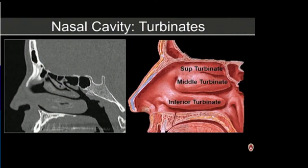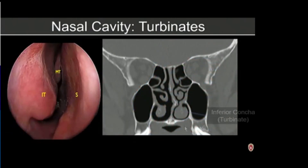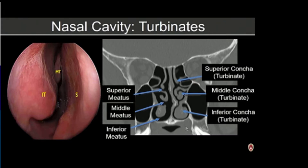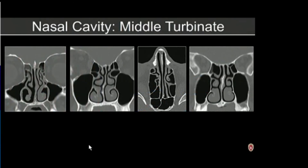Along the lateral nasal cavity we have the turbinates — for the most part the superior, middle, and inferior turbinate, though occasionally a supreme turbinate may be seen. On coronal view we can see the inferior, middle, and superior turbinate, and on their undersurfaces the inferior, middle, and superior meatus respectively. The middle turbinate is a very important landmark for surgeons; they will identify it and may take it down during functional endoscopic sinus surgery if it is contributing to narrowing of the drainage pathway.